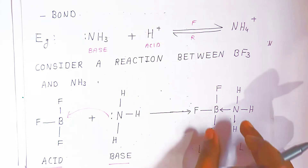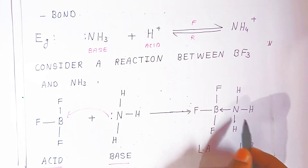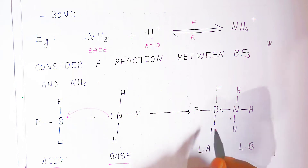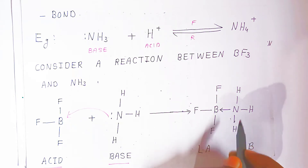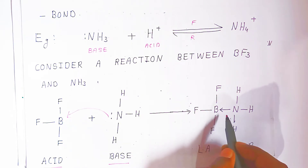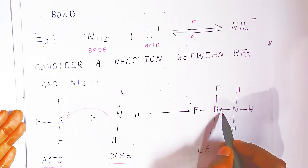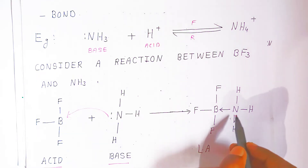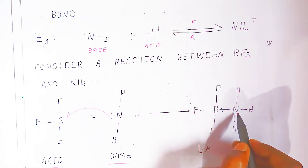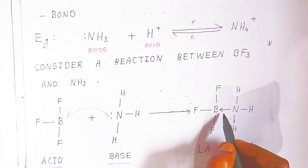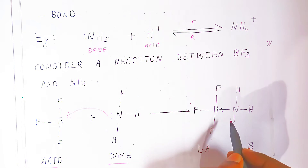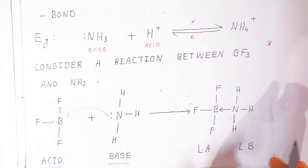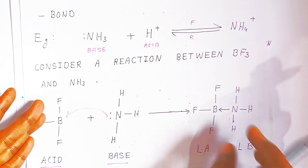This concept was given by Lewis, so we call them Lewis acid and Lewis base. In this compound, the BF₃ part is the Lewis acid and the NH₃ part is the Lewis base. The arrow shows the coordinate covalent bond — both electrons come from nitrogen for the formation of the bond.